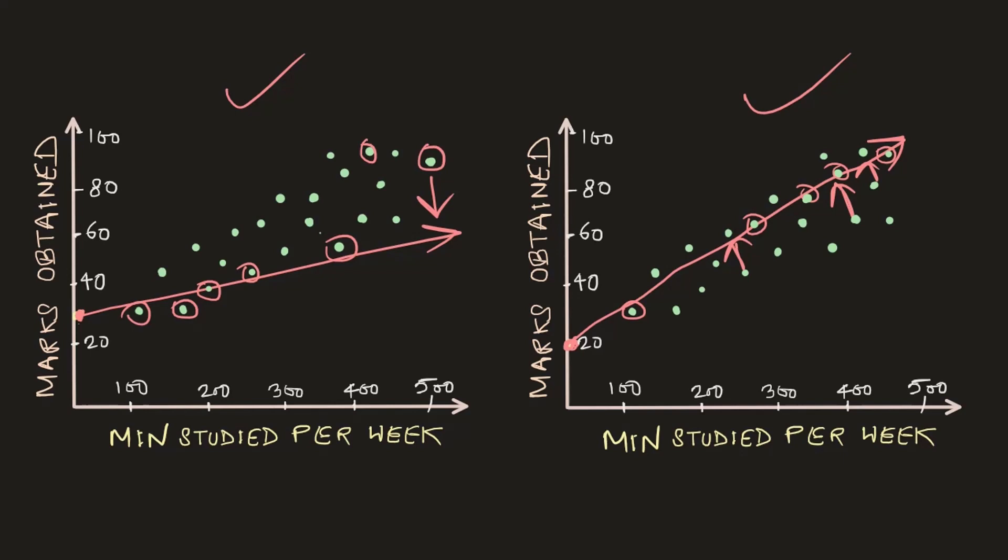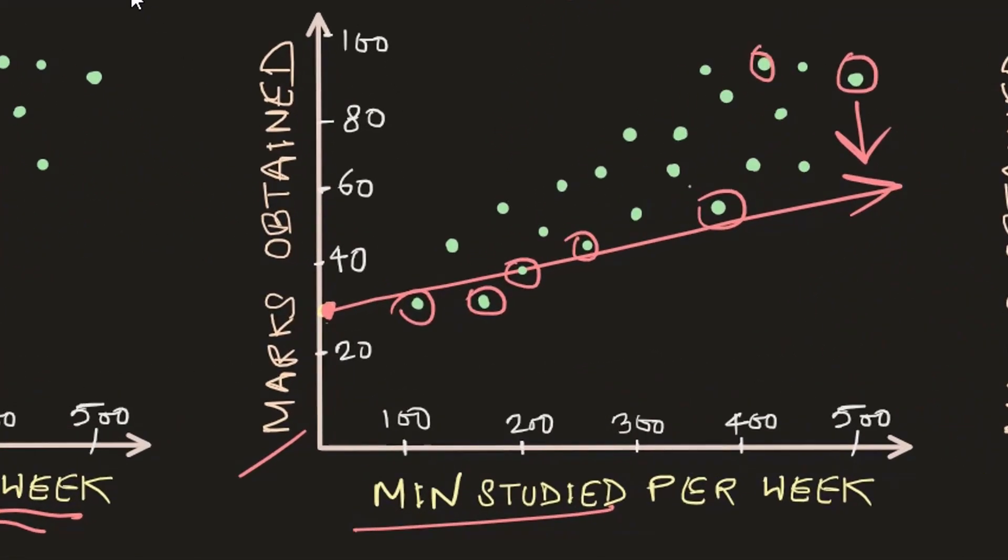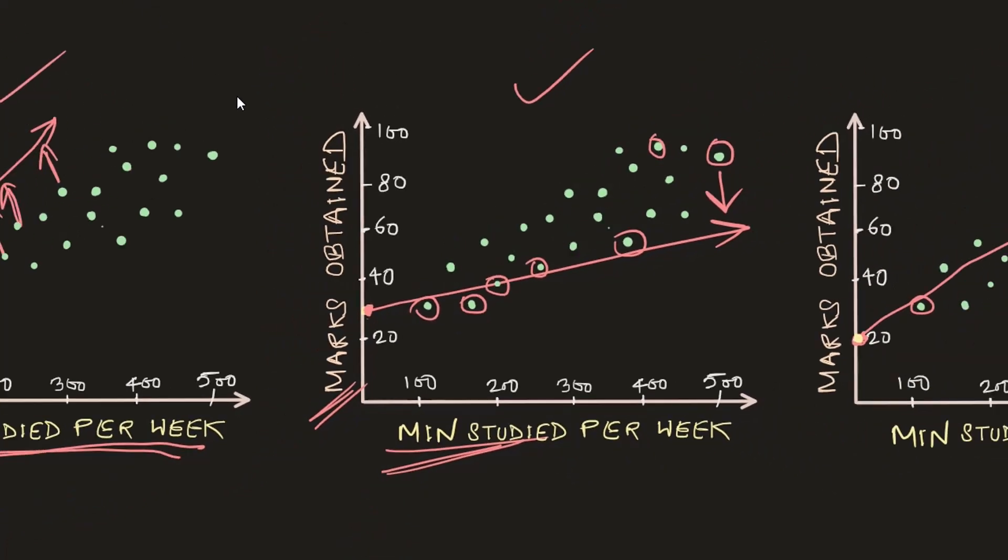Now if someone asks me how much a student is likely to score if he studies around 350 minutes in a week, then my prediction will be falling somewhere over here and very close to the actual prediction. Actually, it was very simple to adjust the straight line after few iterations in such a way that we can optimize the loss because we were trying to solve this problem visually. And we had only two variables, minutes studied and marks obtained, but this problem will become more difficult if you have more number of variables, the dimension is high, which means you have more factors like this that will predict the final output. But our machine learning algorithms are very efficient to deal with such difficulties.